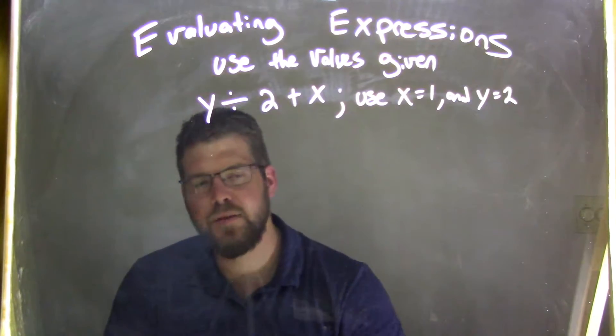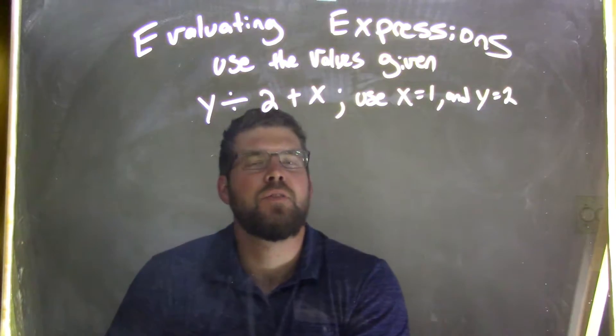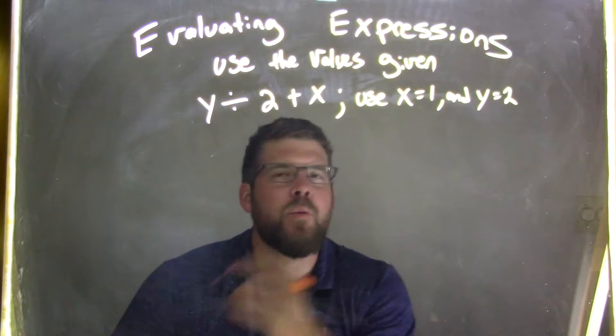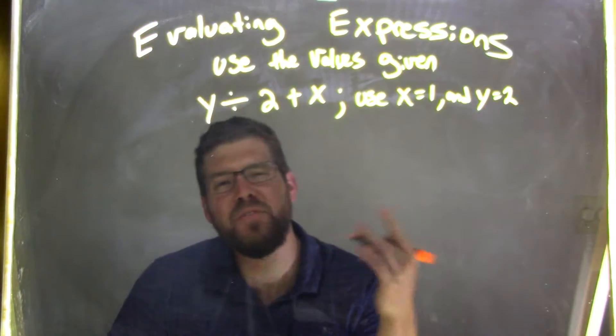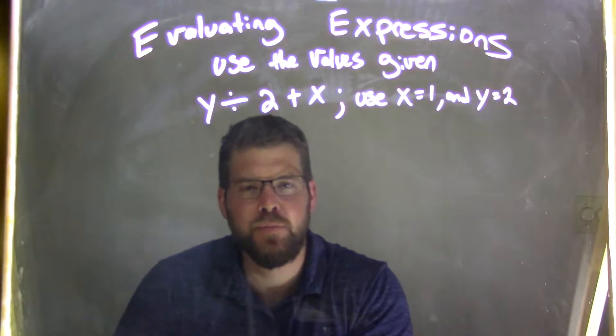So I'm given x equals 1 and y equals 2. So I have y divided by 2 plus x. So I need to substitute 1 in for x and 2 for y. Then I need to simplify.